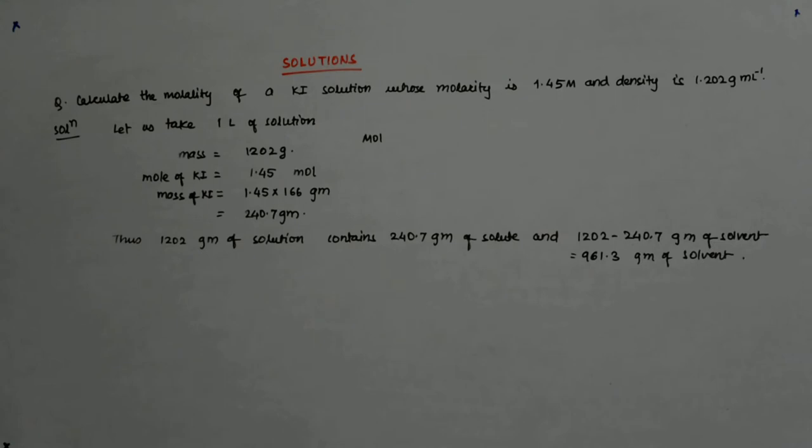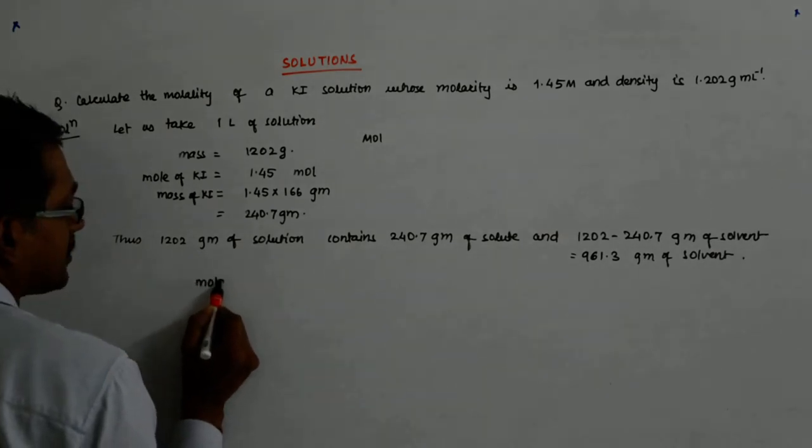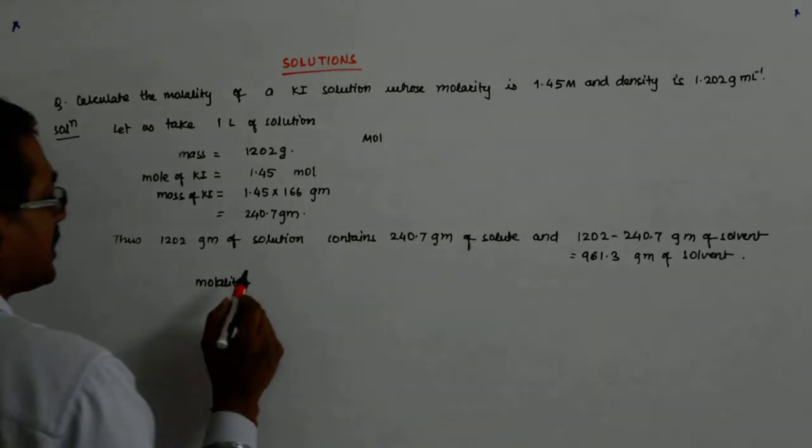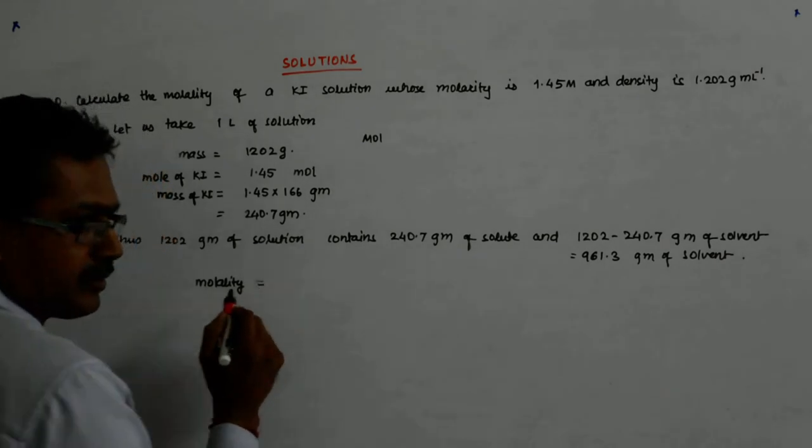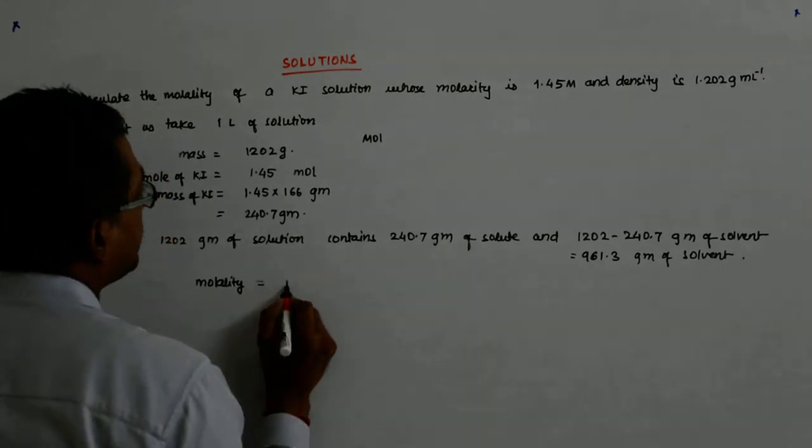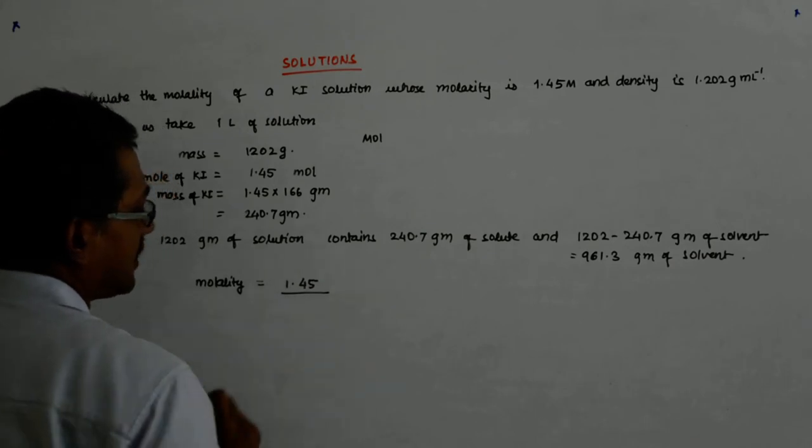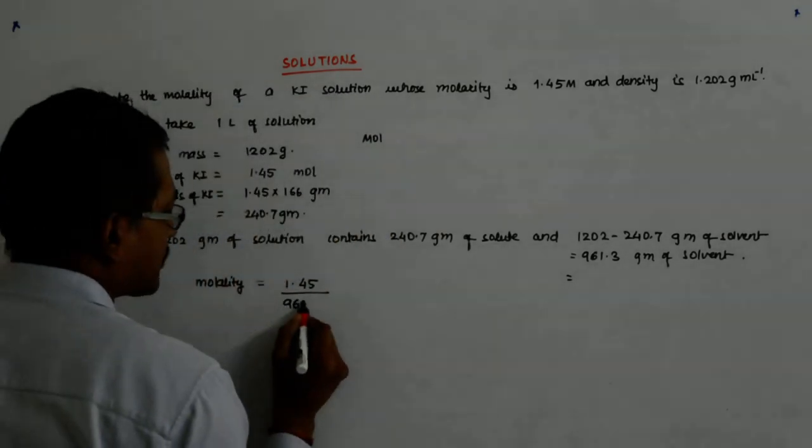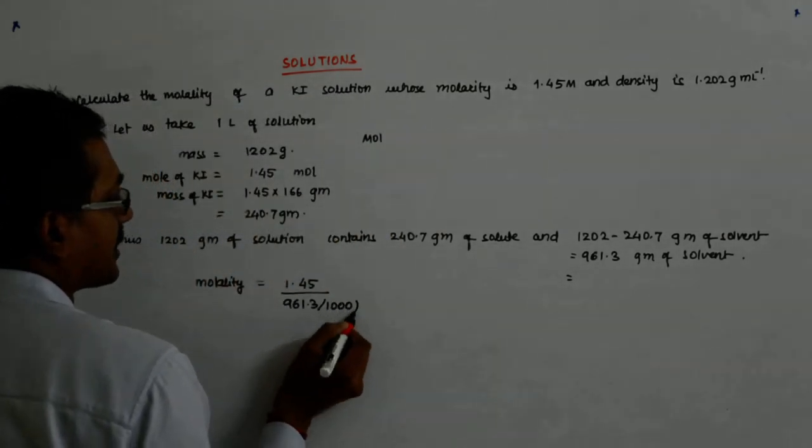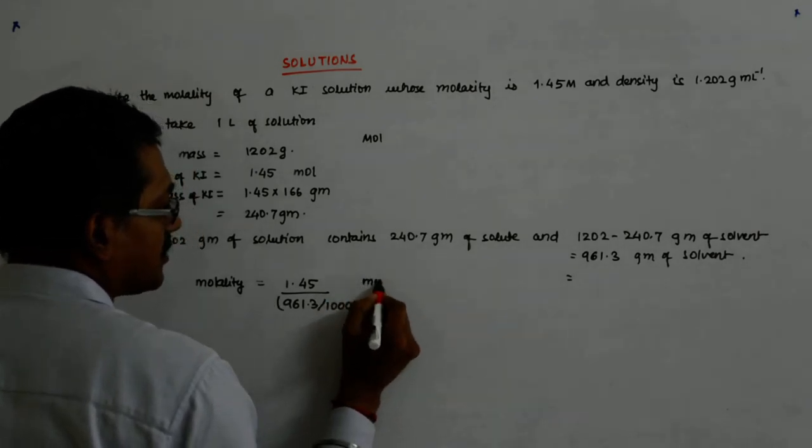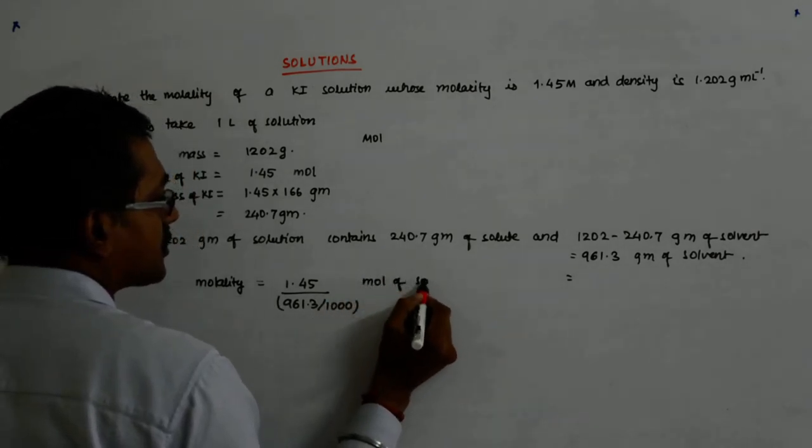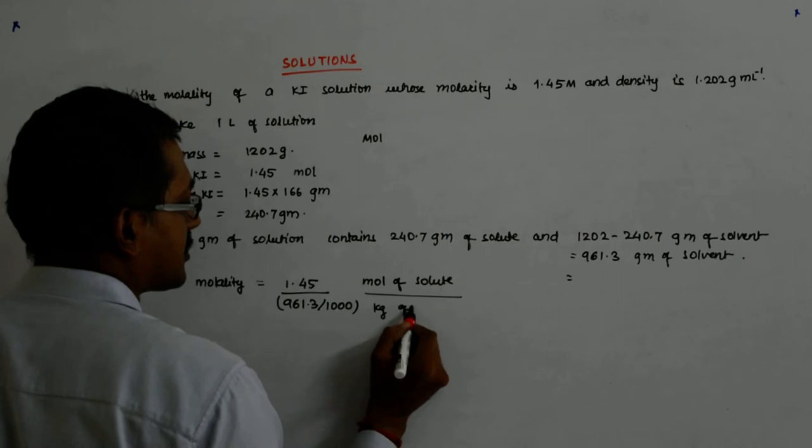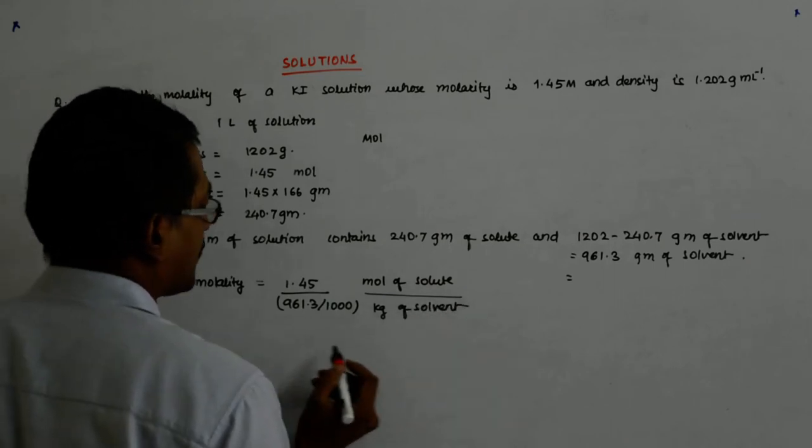Now, let us try to understand, what is molality? The same thing. Now, it has how many moles? That I know. How many moles? 1.45 moles divided by 961.3 upon 1000 kg of solvent. Moles of solute upon so many kg of solvent.